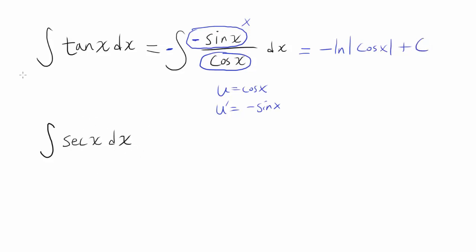Now let's try secant of x. Now this one is not as obvious. And what we are going to do is we are going to multiply by secant of x plus tangent of x to both sides of this fraction. Secant of x plus tangent of x. You are going to see the reason why.